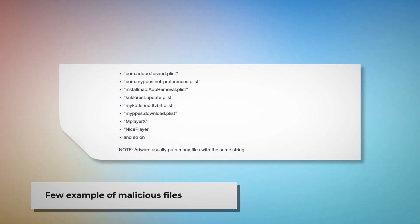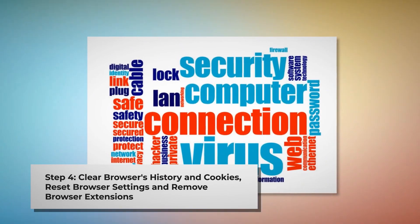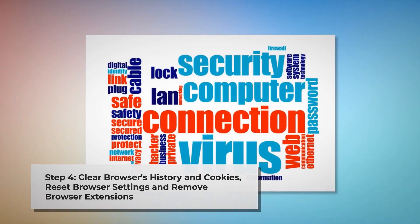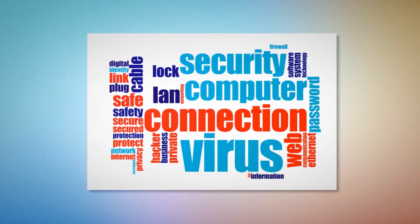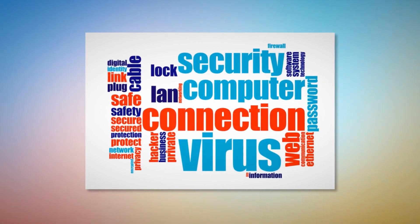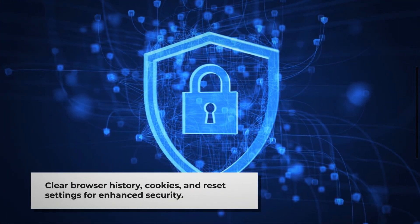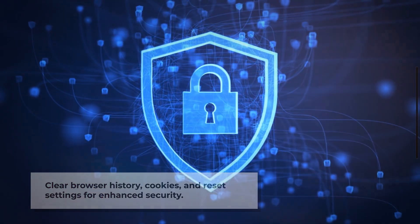Step four: clear your browser's history and cookies, reset browser settings, and remove or disable unknown browser extensions to be safe from adware. Once you delete the harmful files as mentioned in step three, you should delete malicious or unknown extensions from your browsers — Safari, Chrome, Firefox, Opera, and so on, whichever you are or were using. You should also delete browser history and cookies, and reset your browser. Note: before you reset your browser settings, it is always a good idea to back up your bookmarks.